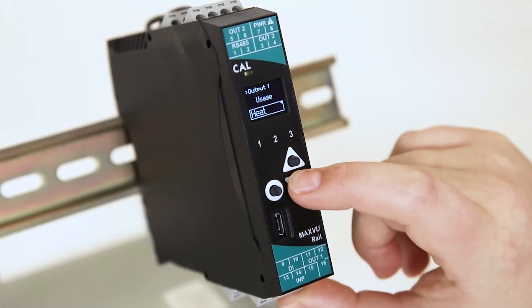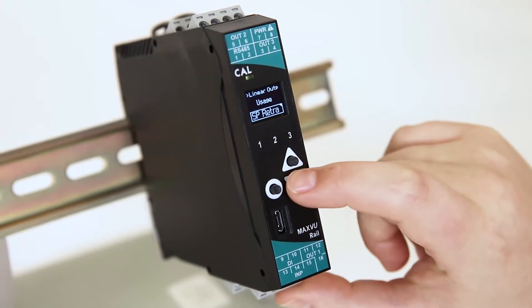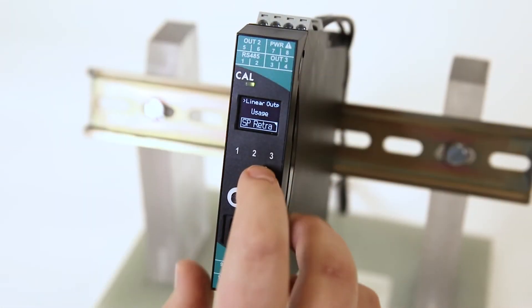MaxView Rail is designed to save you installation time, enabling quick and easy setup with minimal steps via the short user menu.